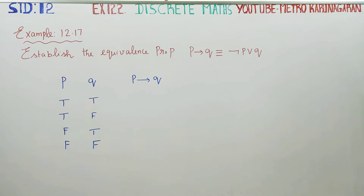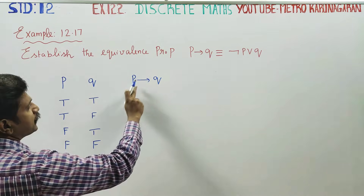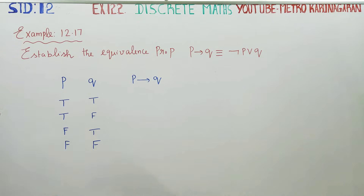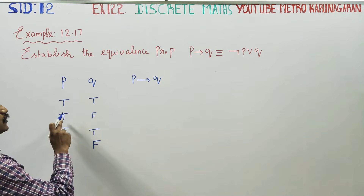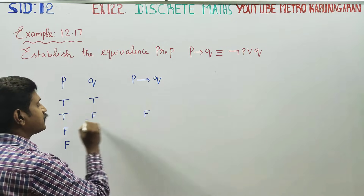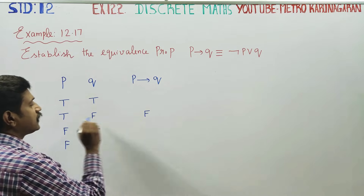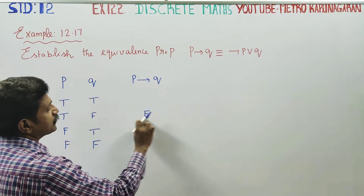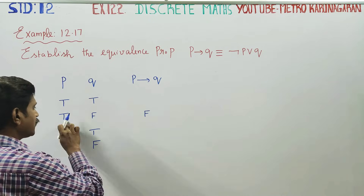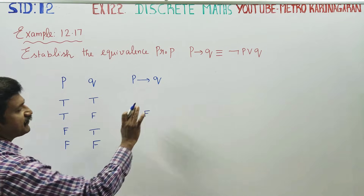We will fill in the truth values starting with P and if P then Q. The pattern for P starts with T, F, F — this is the same pattern repeated for each column.